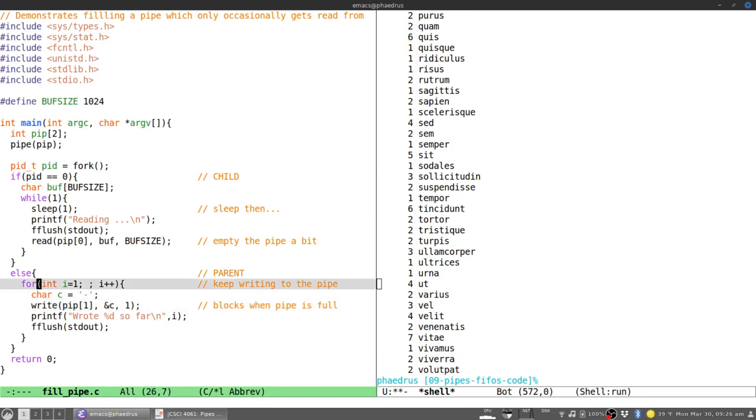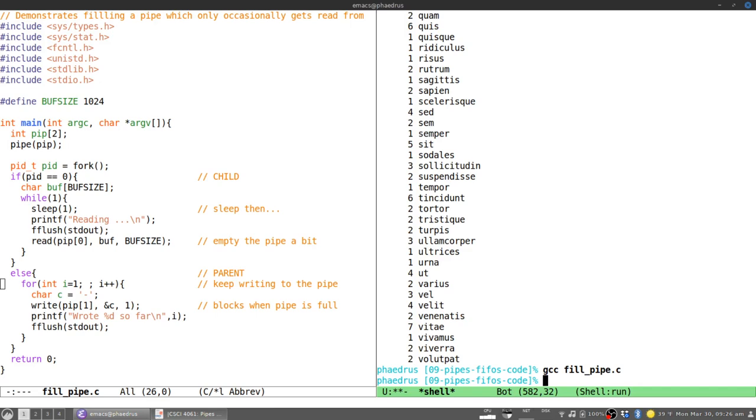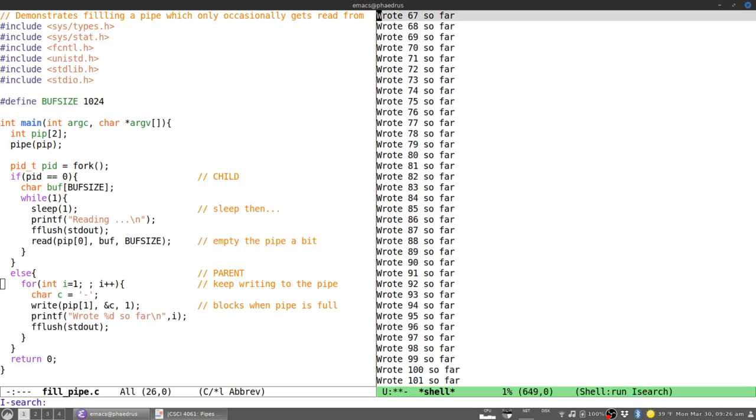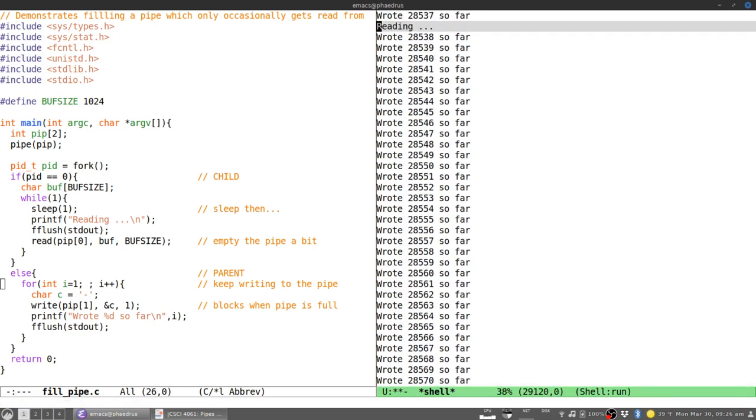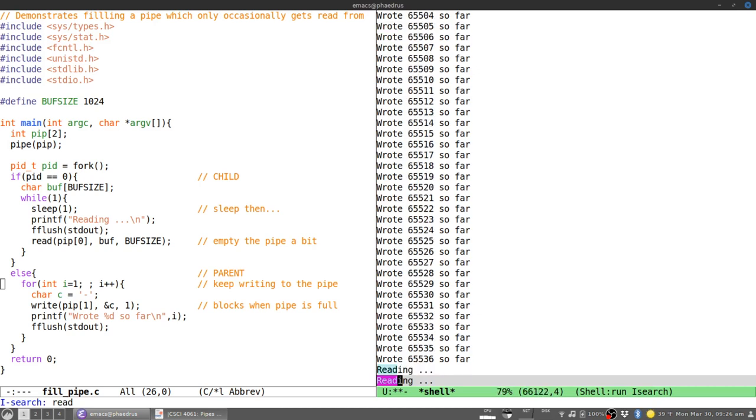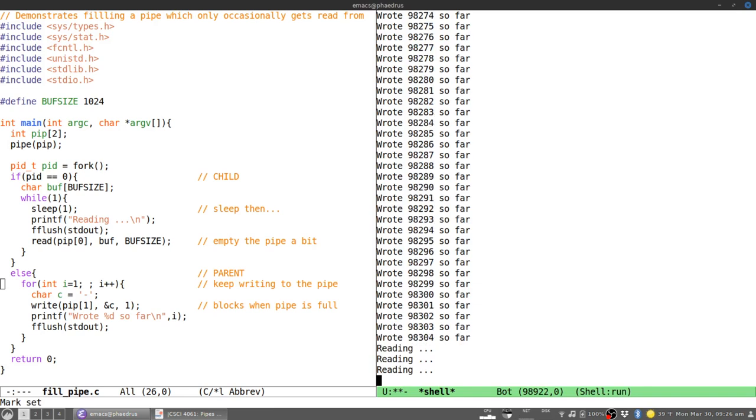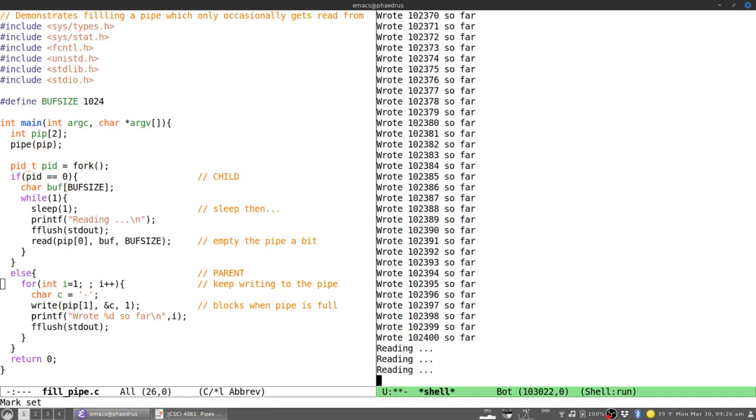The central loop for the child is to sleep for a second, then read some stuff. The parent is going to constantly be writing this single character dash to the pipe and reporting how much it's writing as you go through. If pipes are unlimited in size, you'd expect the parent could chug along writing as fast as it wanted. But we'll see there's a limit to how much the parent can actually write into this.